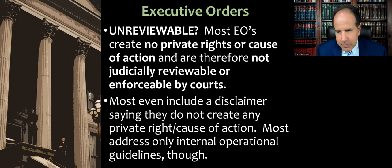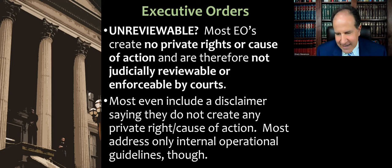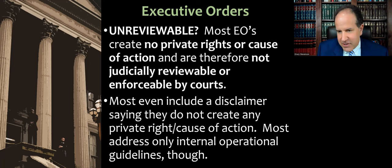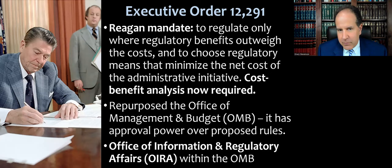Most of these are not terribly interesting. A lot of them address internal operational guidelines within the executive branch, chain of command issues, or try to make agencies coordinate their activities with each other. Once in a while, you get an executive order like the two we're going to talk about that are very consequential and get more media attention and attention from law professors and lawyers. And so that brings us to President Reagan's Executive Order 12291.